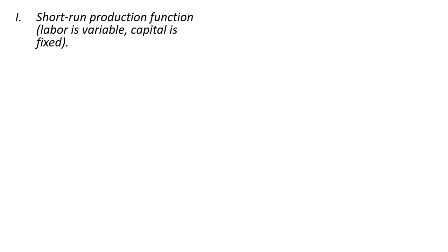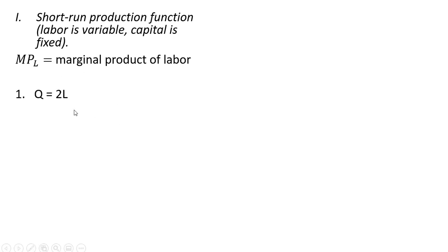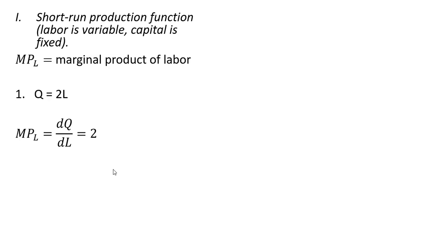Let's start with our examples, beginning with the short run. Here labor is the variable input and capital is by default fixed. MP subscript L represents the marginal product of labor. Here is our short-run production function: output Q equals 2 times L, where L is units of labor. The marginal product of labor is the derivative of this production function with respect to L. The derivative of 2L is 2. Here the marginal product of labor is constant — every time we hire one more worker, output always goes up by 2 units.